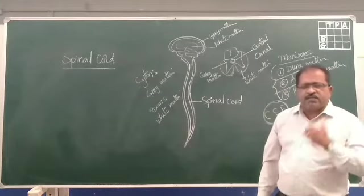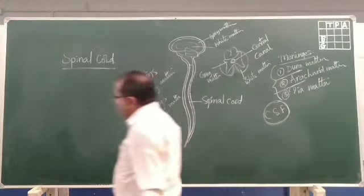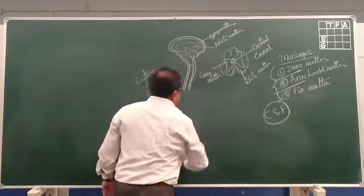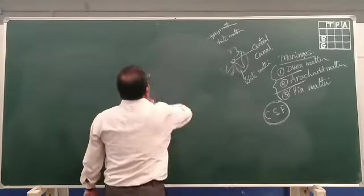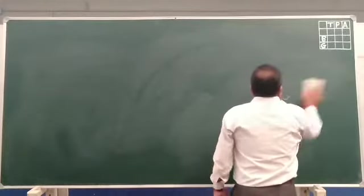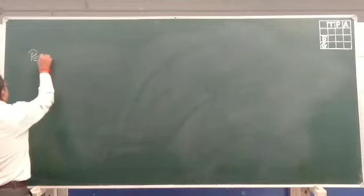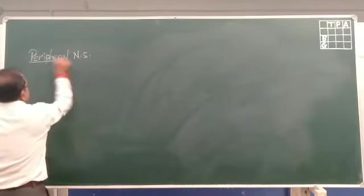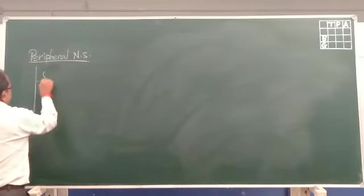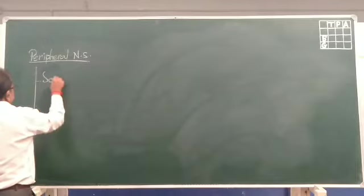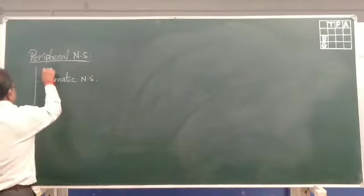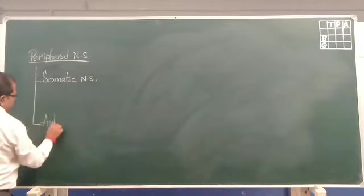Now we are moving to another nervous system — that is the peripheral nervous system. The peripheral nervous system is of two types: somatic nervous system and autonomic nervous system.